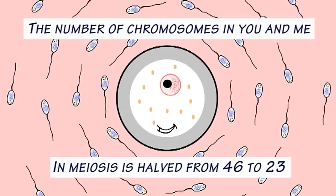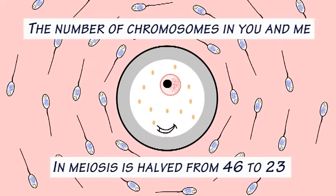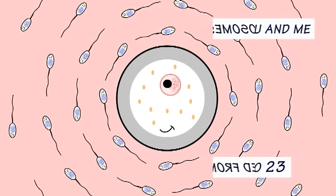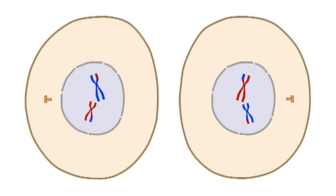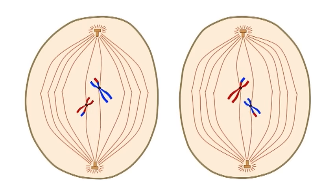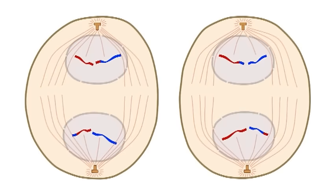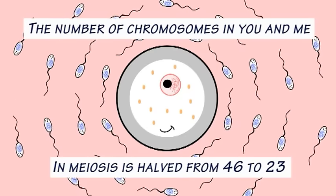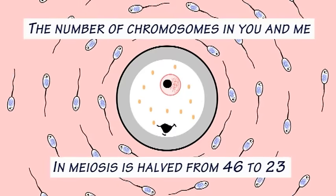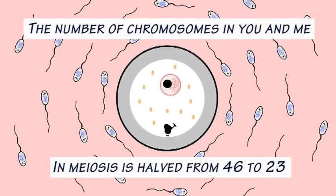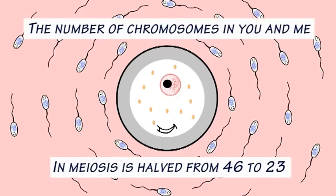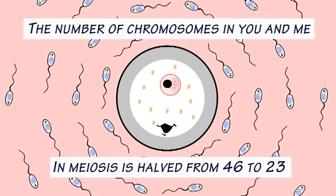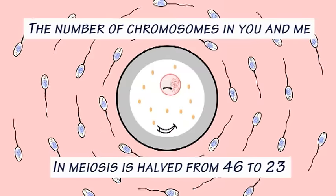In meiosis it goes from 46 to 23. Each of these daughter cells divides once more, which makes a set of haploid cells that equals 4. Remember the number of chromosomes in you and me — in meiosis it goes from 46 to 23.